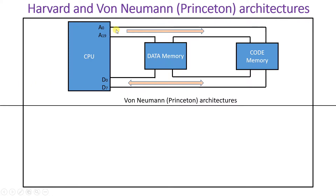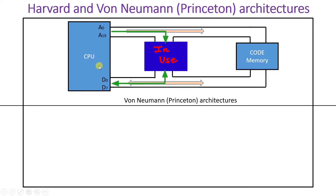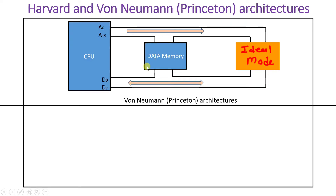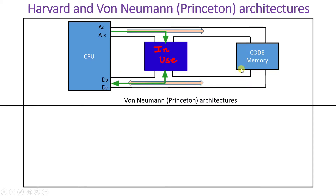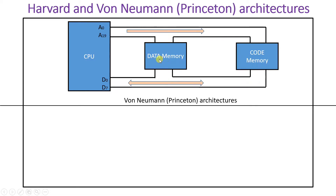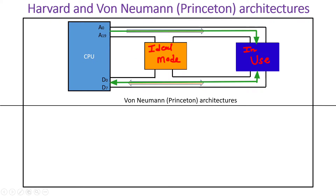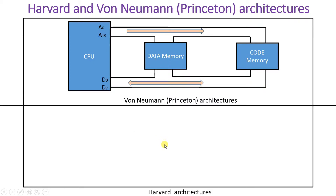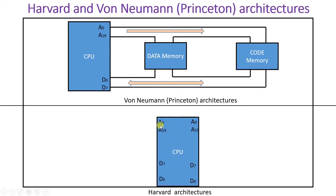This architecture has some advantages and disadvantages. If data memory is accessing the CPU, the code memory stays in idle mode, and vice versa. So at the same time, the CPU cannot provide services to both data memory and code memory simultaneously.